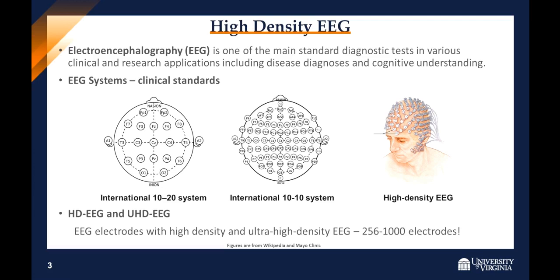EEG is a standard technique for measuring scalp electrical signals generated by brain activities, which is widely used for disease diagnoses and treatments, as well as in brain-computer interfaces. Clinical EEG systems normally use standard electrode placements, such as the International 10-20 or 10-10 system with 10 to 64 electrodes over the scalp.